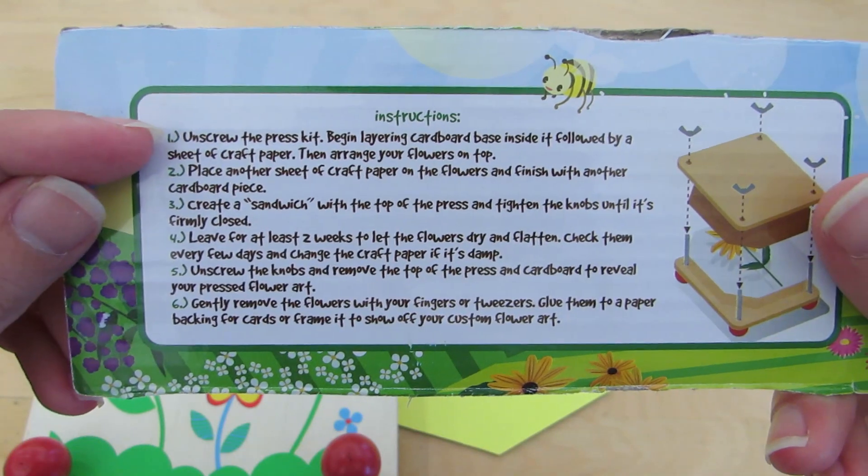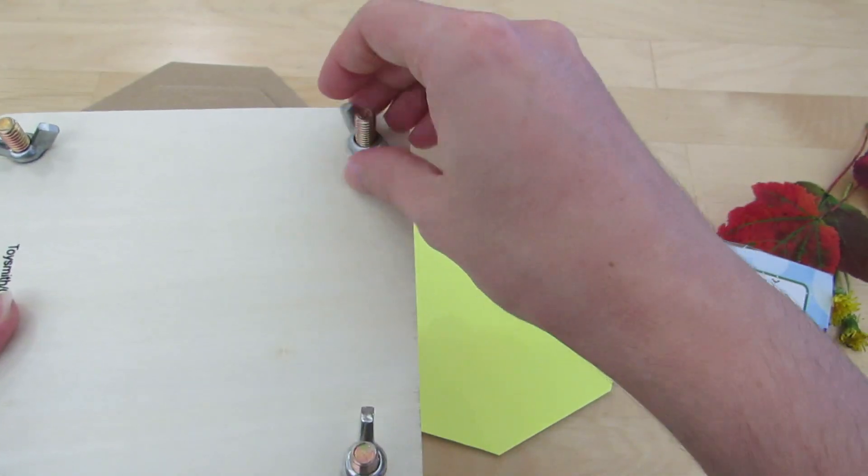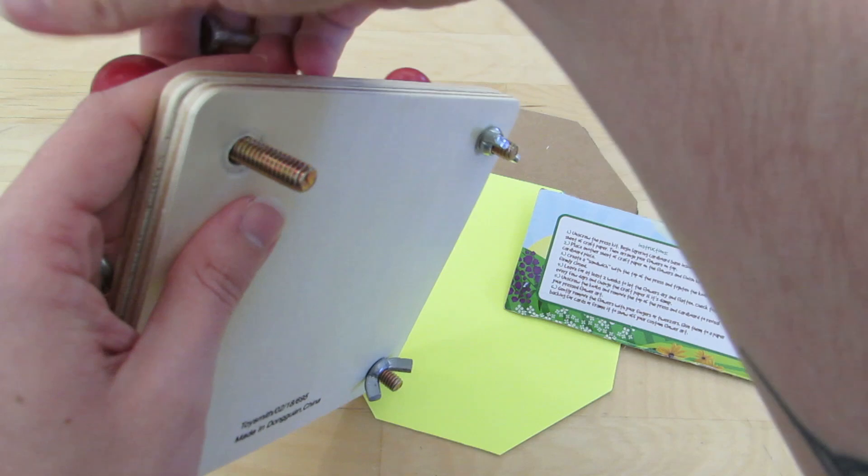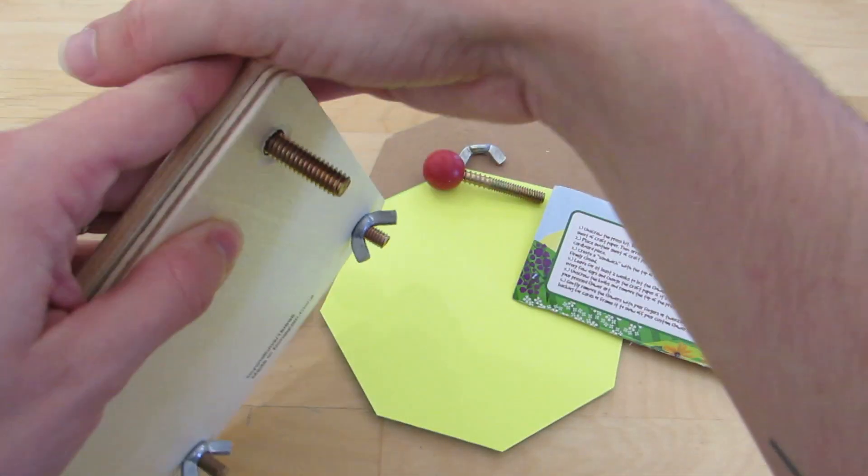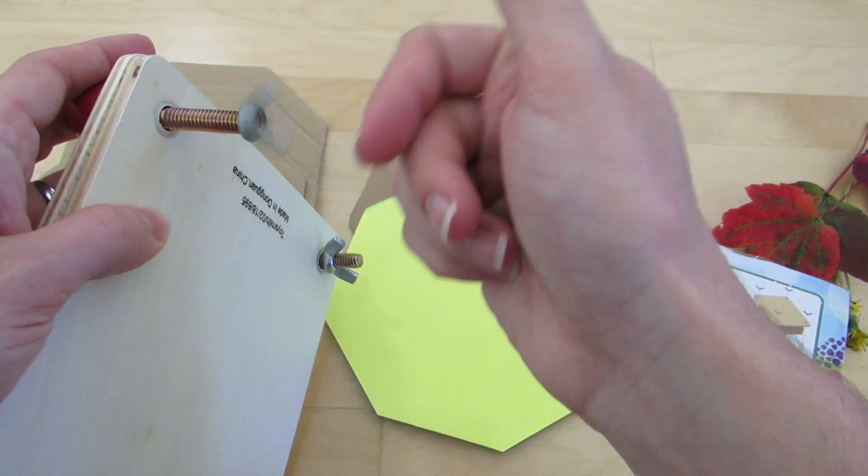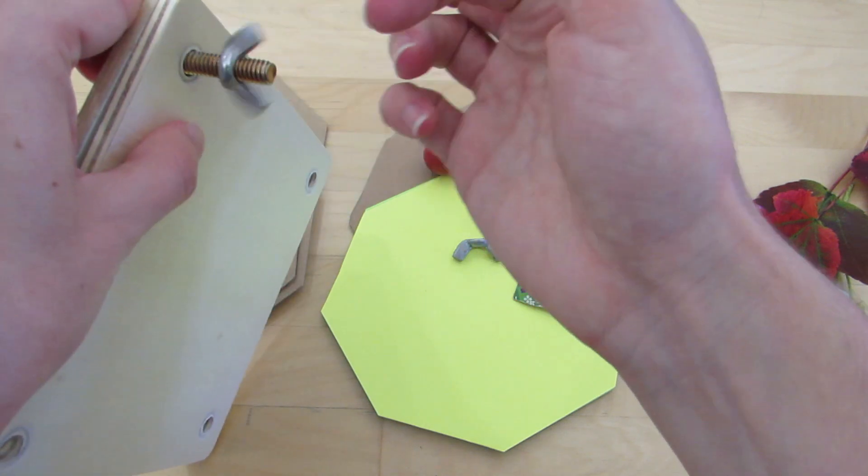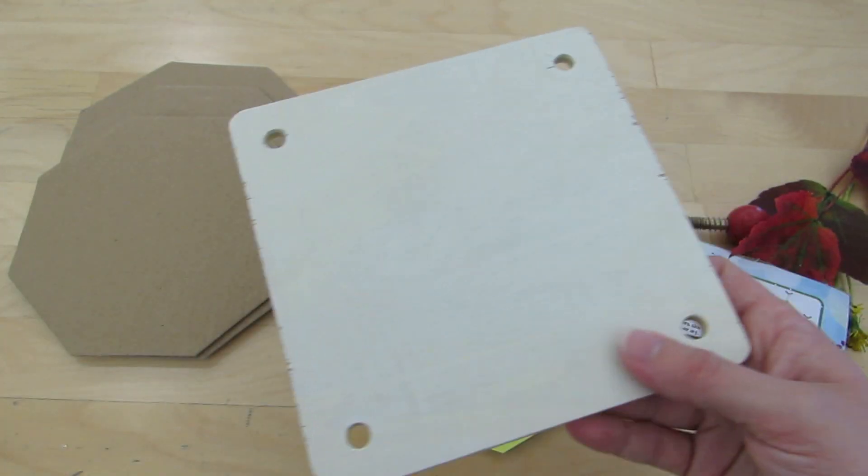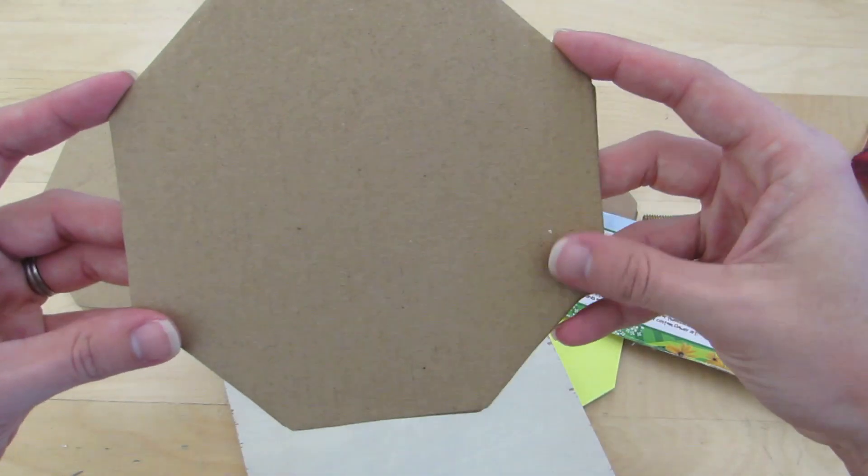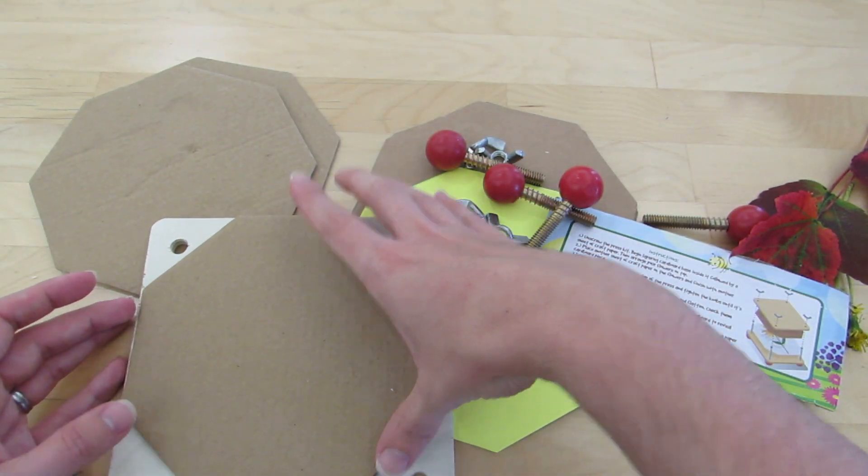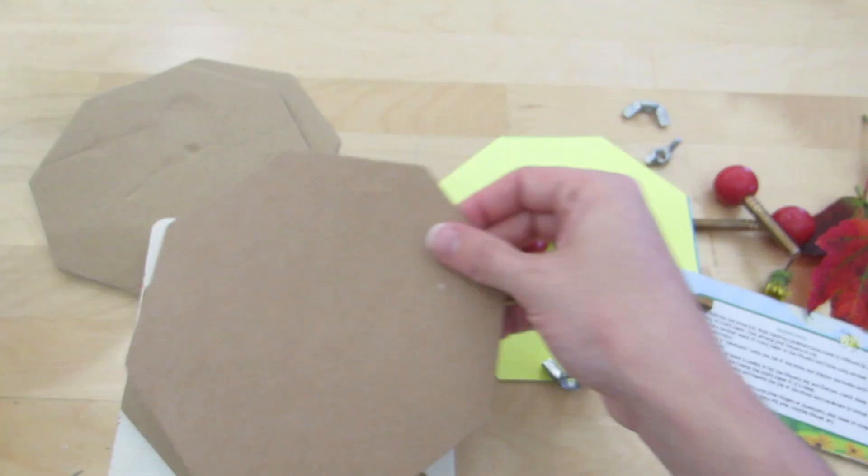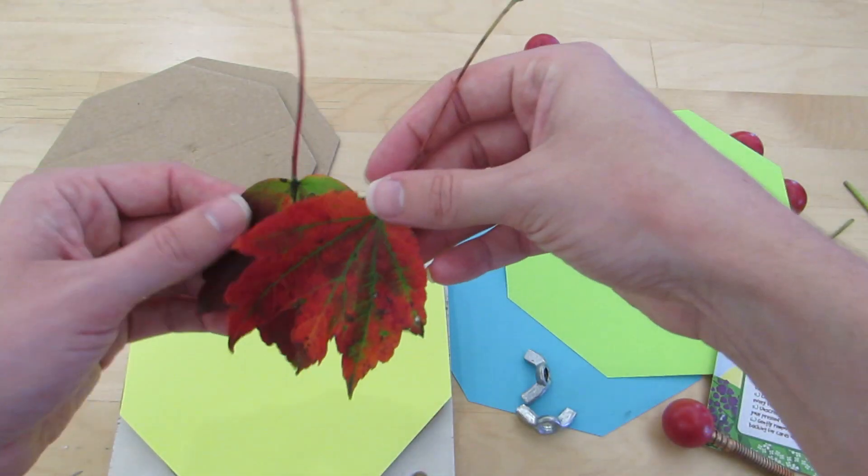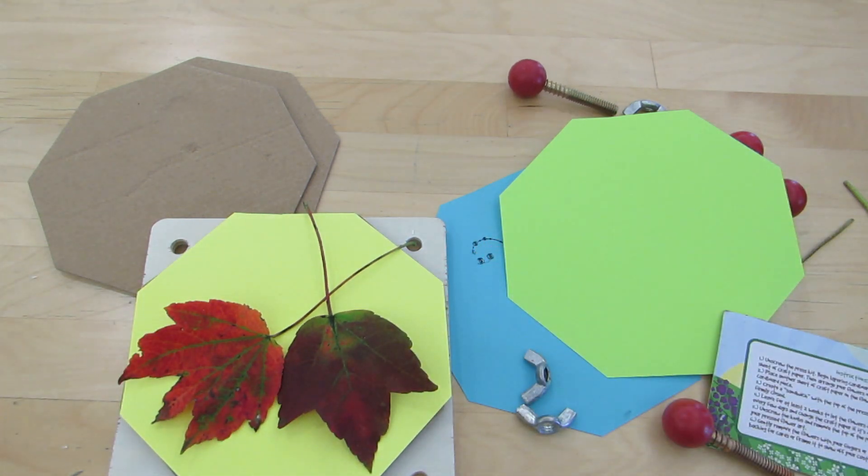So the instructions will tell you everything you need to know, but the first thing is to unscrew the press. And this just takes a little bit of time to get these wing nuts off. It's very important that when you're taking these off that you put them somewhere where you know you aren't going to lose them, like a little bowl or a cup, because if you lose these wing nuts, then you can't really use the press. So you'll unscrew everything. You'll put in two pieces of cardboard first, two pieces of this light cardstock, and then a piece of paper. I just traced the cardboard to give the piece of paper the correct shape to fit in the press.